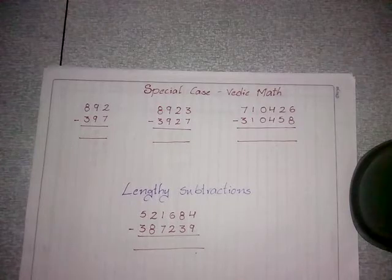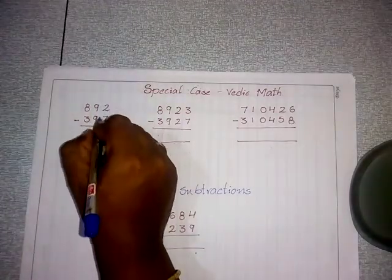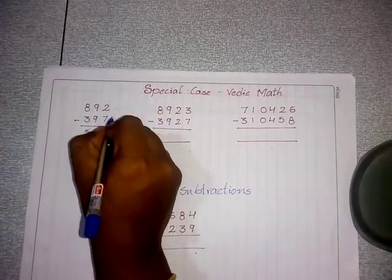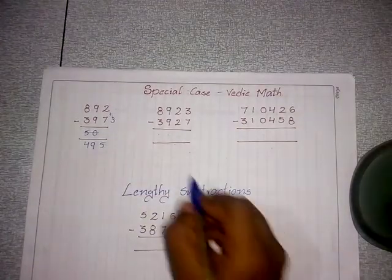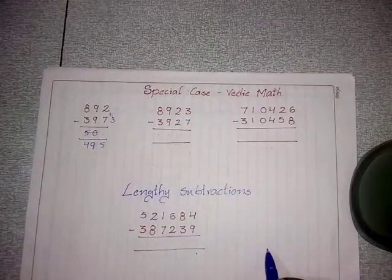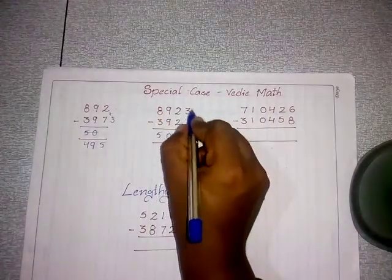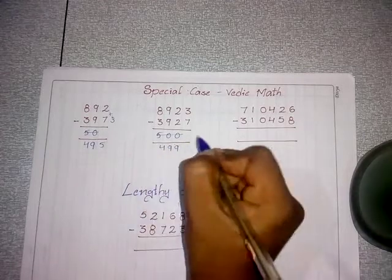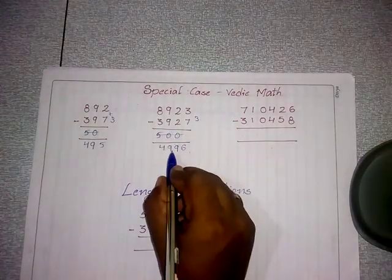Now special case subtraction in Vedic maths — for example, 89 minus 39 equals 50, but the next units place is mismatch, so reduce 50 by 1 to get 49. The complement of 7 is 3; 3 plus 2 equals 5. The answer is 495. Another example: 8923 minus 3922. The repeated digits cancel — 8923 minus 3922: 8 minus 3 is 5, 9 minus 9 is 0, 2 minus 2 is 0, but the next unit is mismatch, so reduce: 892 minus 392 equals 500, reduce to 499. Complement of 7 is 3; 3 plus 3 equals 6. The answer is 4996.